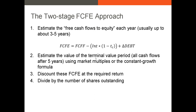Step two is to estimate the terminal value period — same as before, using market multiples or the constant growth formula. Then we discount all free cash flows to equity at the required return using CAPM. Unlike the FCFF approach, we don't need to subtract debt and add cash, because FCFEs already represent cash flow only to shareholders — we've already removed the benefit to bondholders via interest and accounted for changes in debt. We simply divide our intrinsic market cap by shares outstanding to get intrinsic price per share.